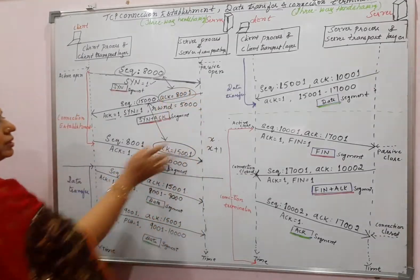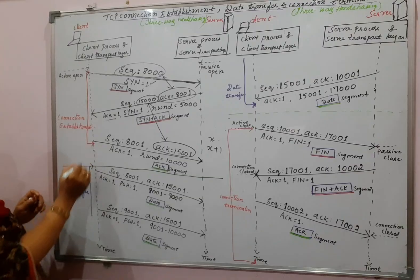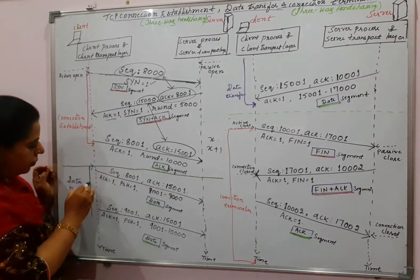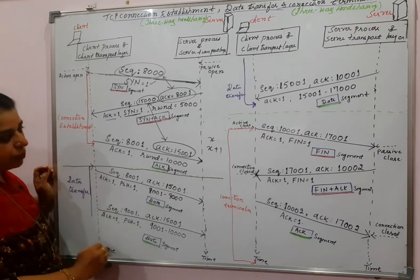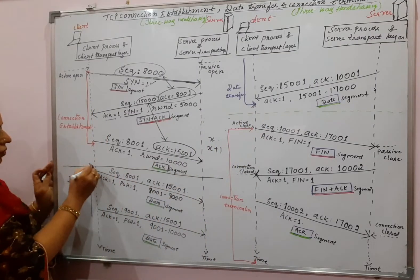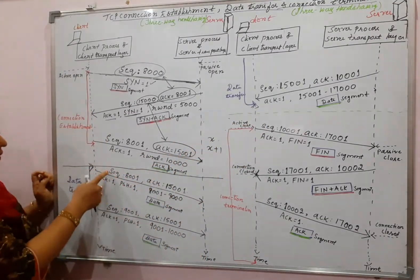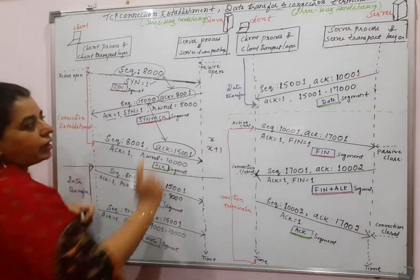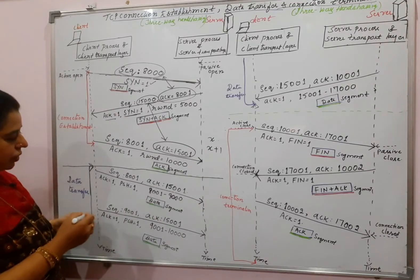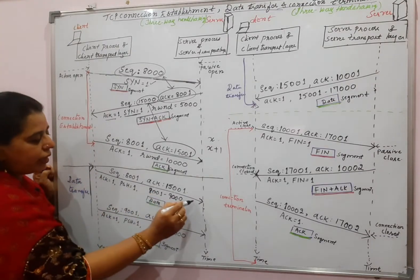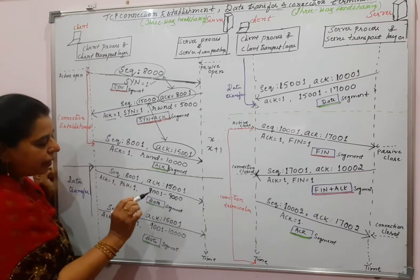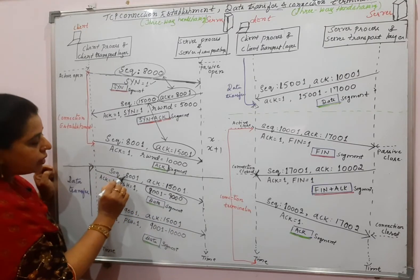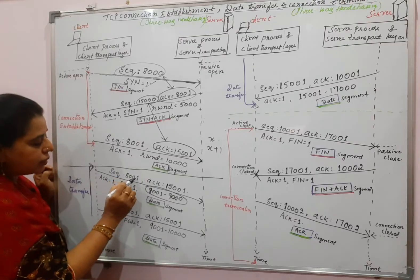Since in the previous session I explained the connection establishment, now let me show you the data transfer phase. The purple color I have indicated starts here and ends here — two different segments here and one segment here. These three segments are related to the data transfer phase. The client starts sending 1000 bytes of data. That range is indicated here: 8001 to 9000, which is 1000 bytes. And the sequence number chosen starts with 8001.